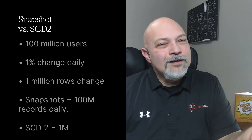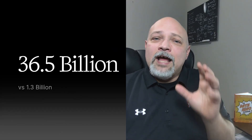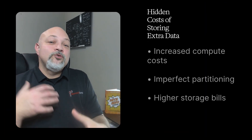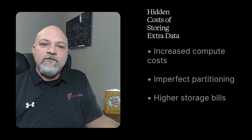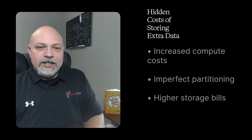Let's look at the actual math. You have 100 million users and only 1% change their profile daily. The snapshot approach writes 100 million rows every night — 99% duplicated waste. The SCD2 approach writes only 1 million rows. Over a year, snapshots write 36.5 billion records versus SCD2's 1.3 billion. When your CFO asks why the Snowflake or Databricks bill doubled, telling them SCD2 logic was too complex to write is not an acceptable answer. You'll also inevitably increase compute costs, contributing further to that higher bill.